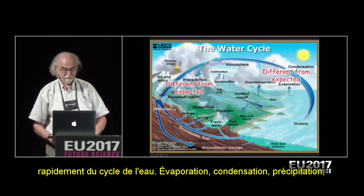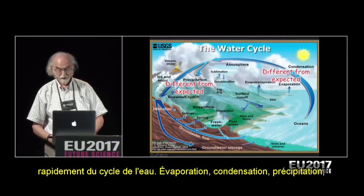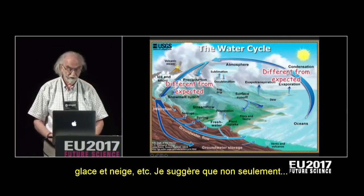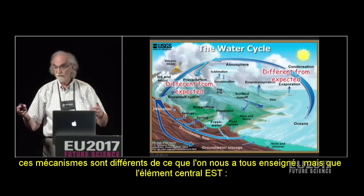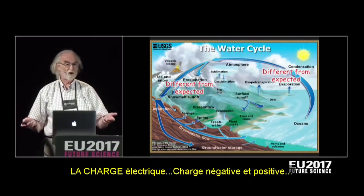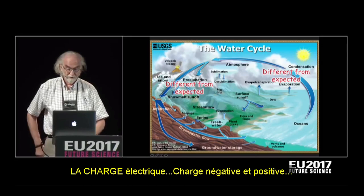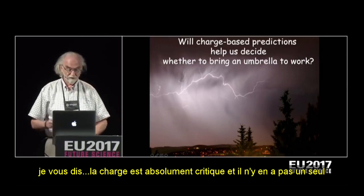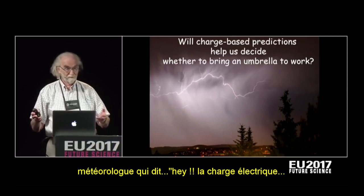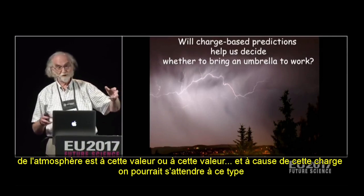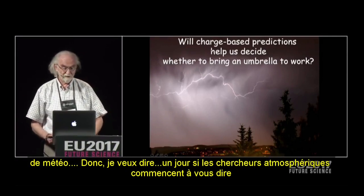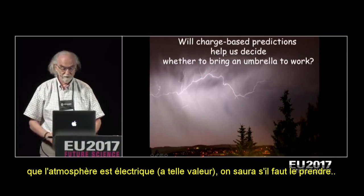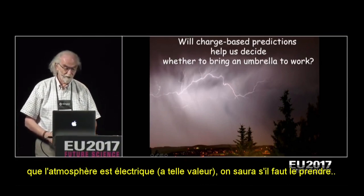I've gone quickly through the entire cycle — evaporation, condensation, precipitation, ice and snow, and so on — and I'm suggesting that not only are the mechanisms different from what we've all learned, but that a central feature for all of this is charge: negative charge and positive charge. There's not a single weather forecast I've ever seen that says the charge in the atmosphere is such and such, and because of the charge we may expect this kind of weather. I think one day, if atmospheric scientists begin to take into account that the universe is really electrical, we'll know whether to bring an umbrella to work.